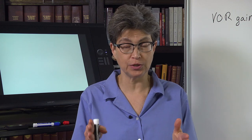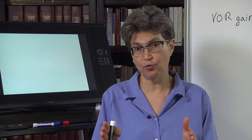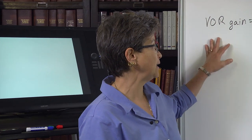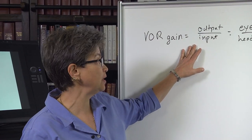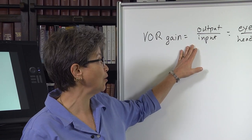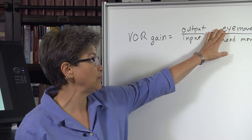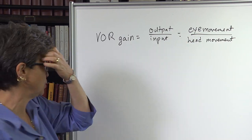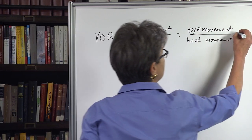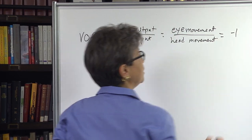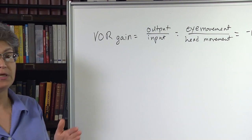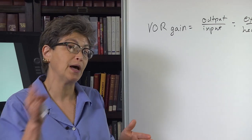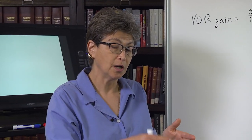One of the ways that we can describe the VOR is in terms of its gain. The VOR gain is the output over the input — the output of the VOR is the eye movement and the input is the head movement. So basically this should equal negative one: the eye movement should be exactly equal to but in the opposite direction from the head movement.